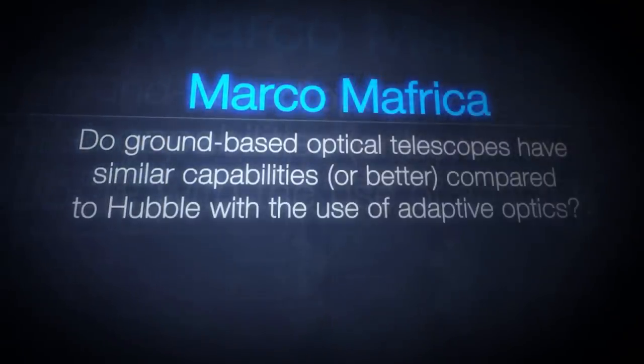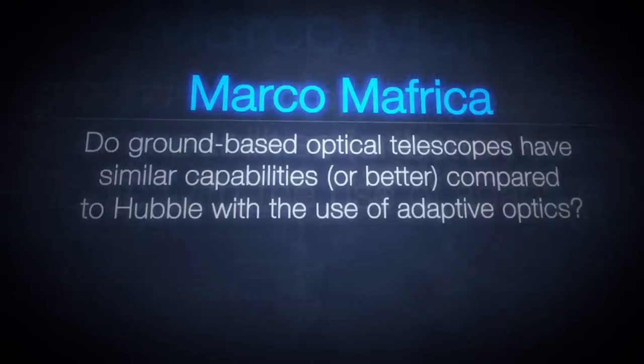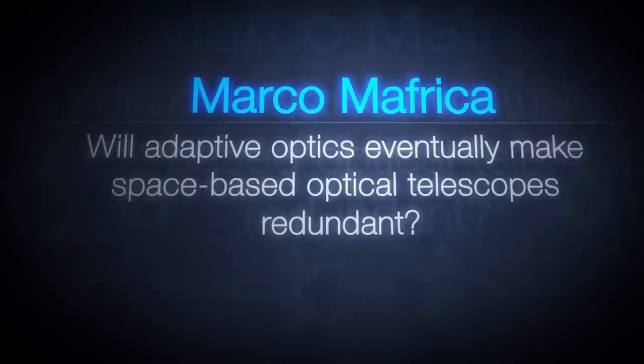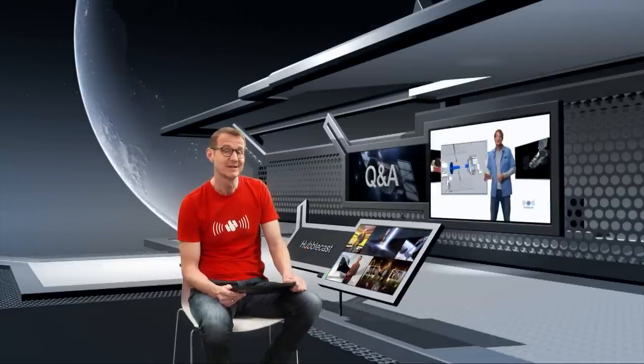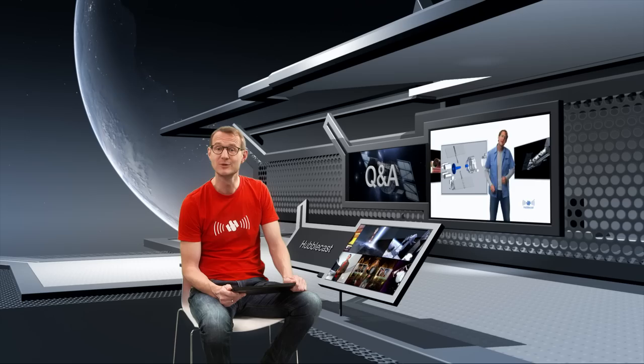Now the possibility of a collision with space debris is definitely a downside for space telescopes. Some of you wanted to know more about the pros and cons of space versus ground-based telescopes. Do ground-based optical telescopes have similar capabilities, or better, compared to Hubble with the use of adaptive optics? Will adaptive optics eventually make space-based optical telescopes redundant? Well, a much younger version of me actually discussed this in some detail back in Hubblecast episode 6.